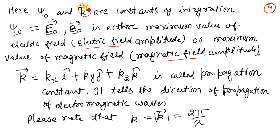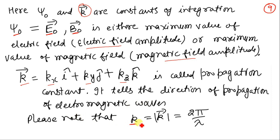The quantity k is called the propagation constant. It is a vector quantity with three components kx, ky, and kz, usually written as k vector = kx î + ky ĵ + kz k̂. We know from school physics that k, the magnitude of the propagation constant, is equal to 2π/λ, where λ is the wavelength of the electromagnetic wave. Remember this relation for understanding the further part of the lecture.